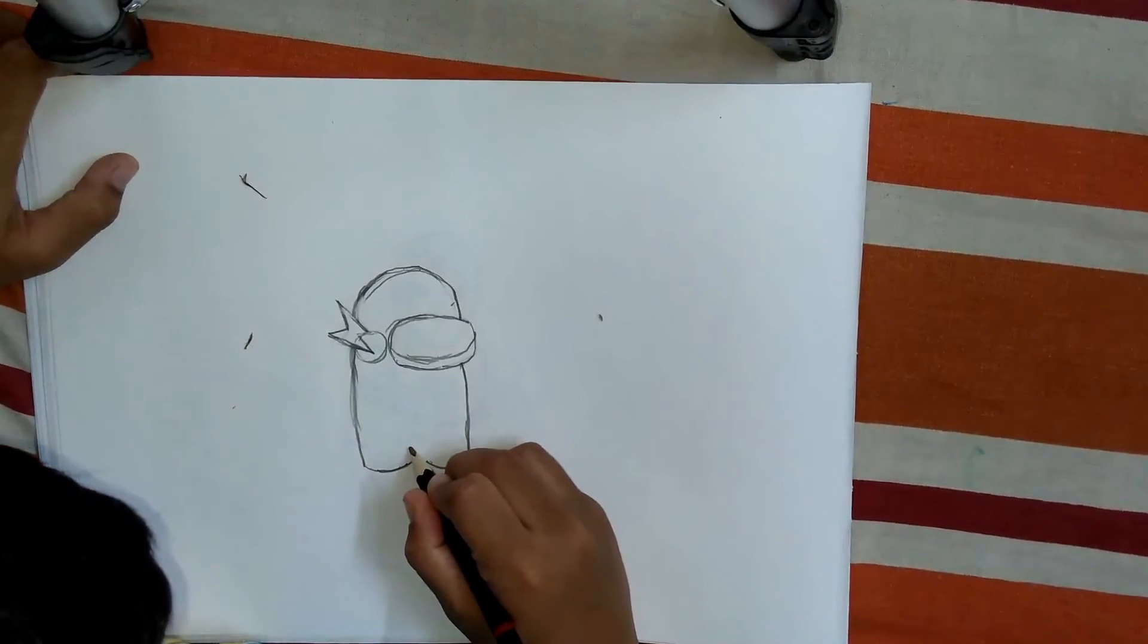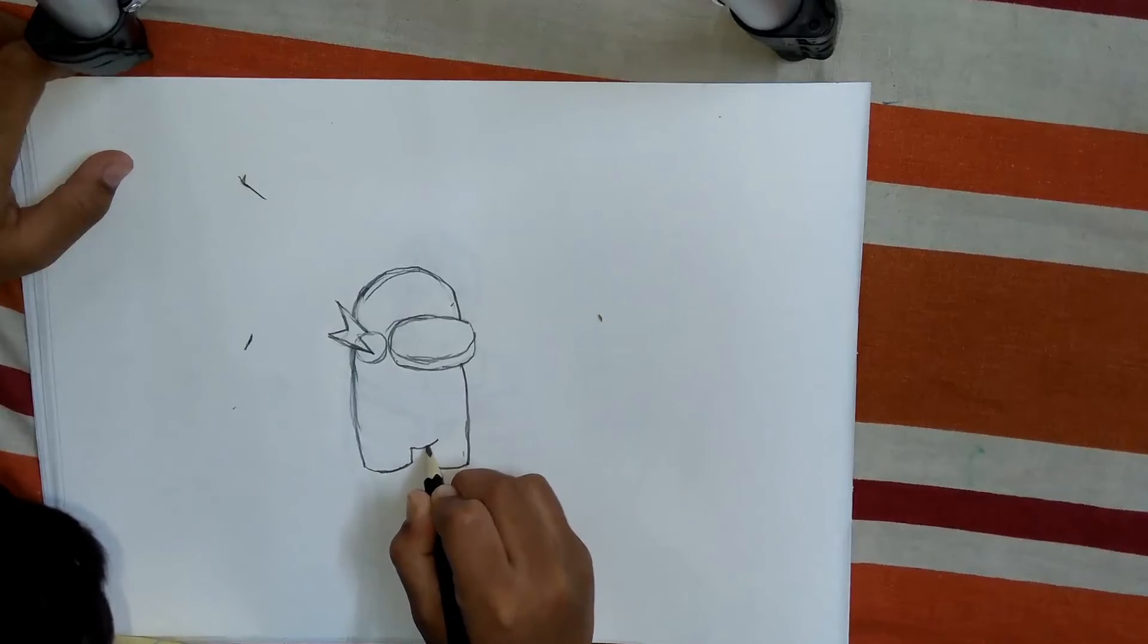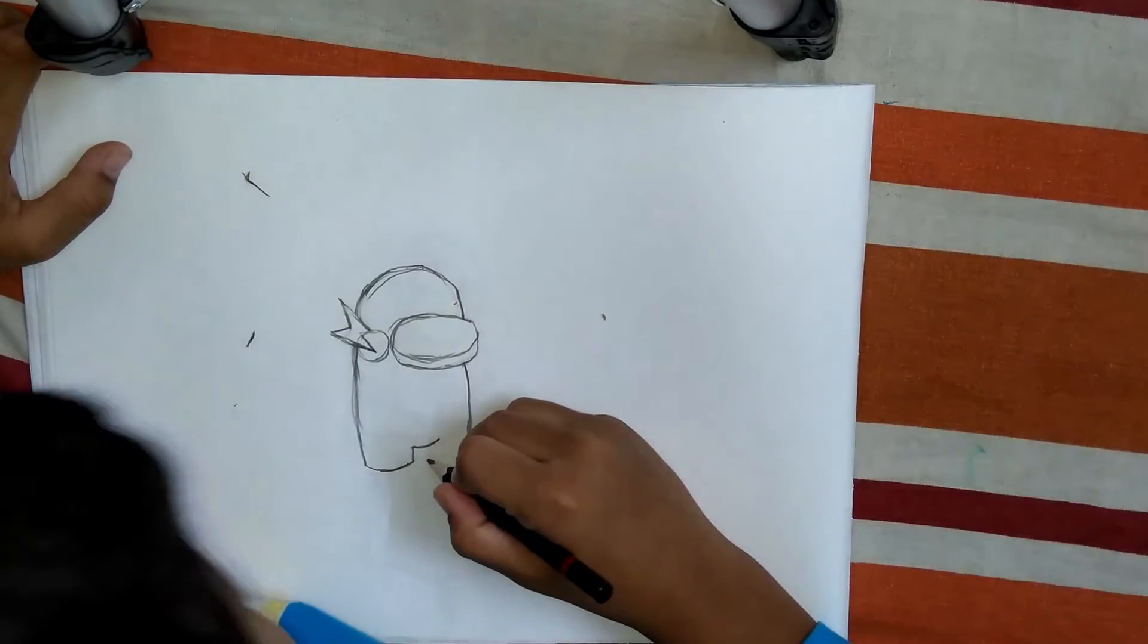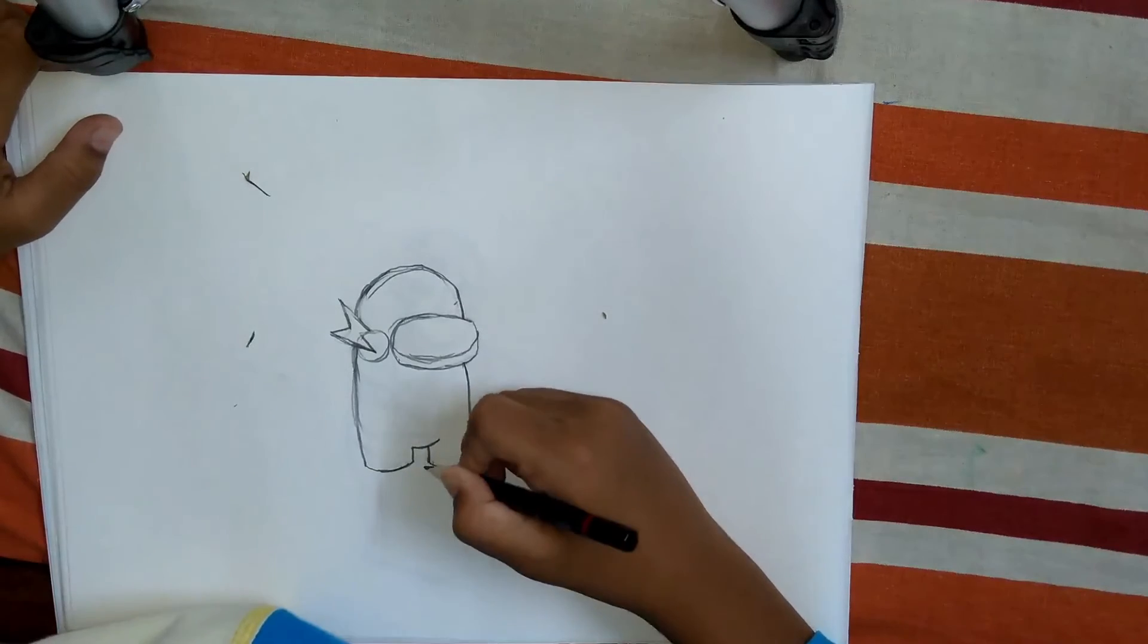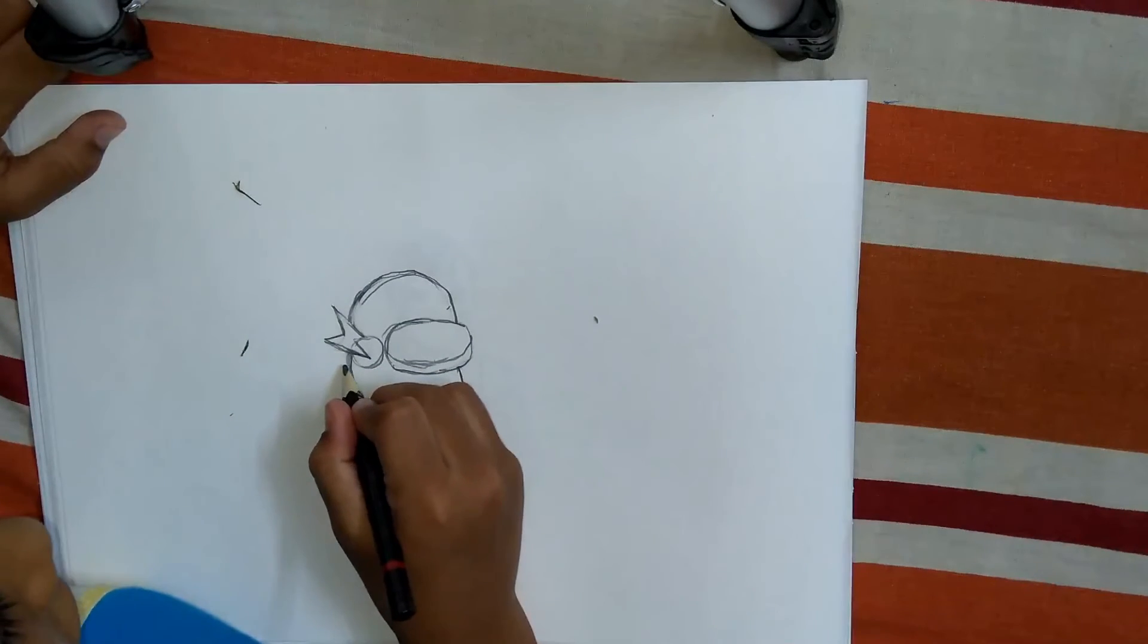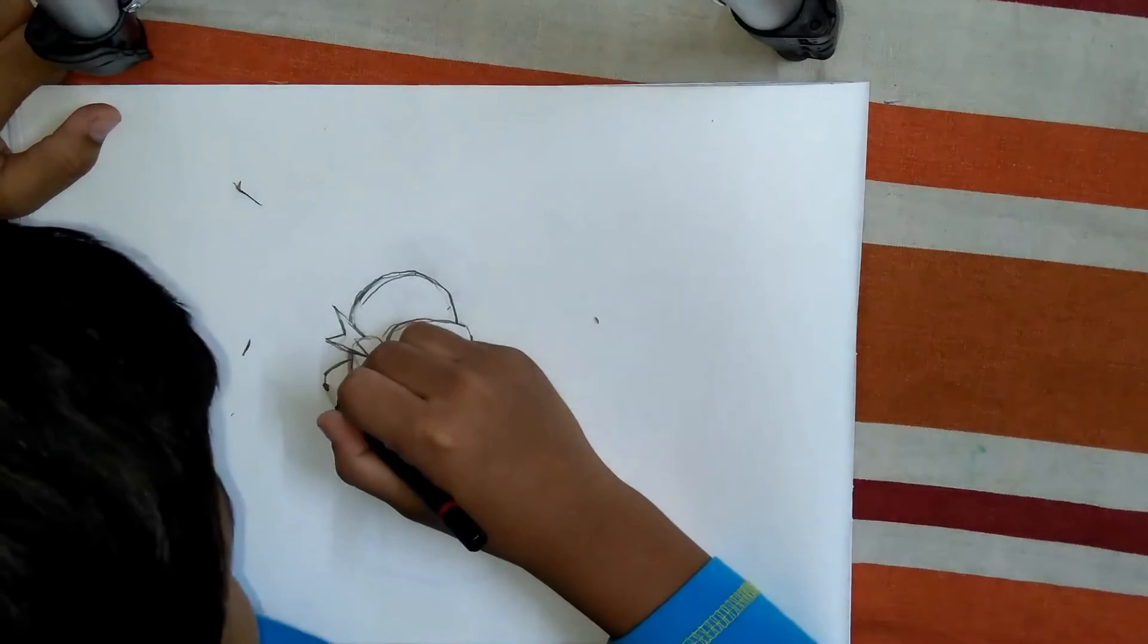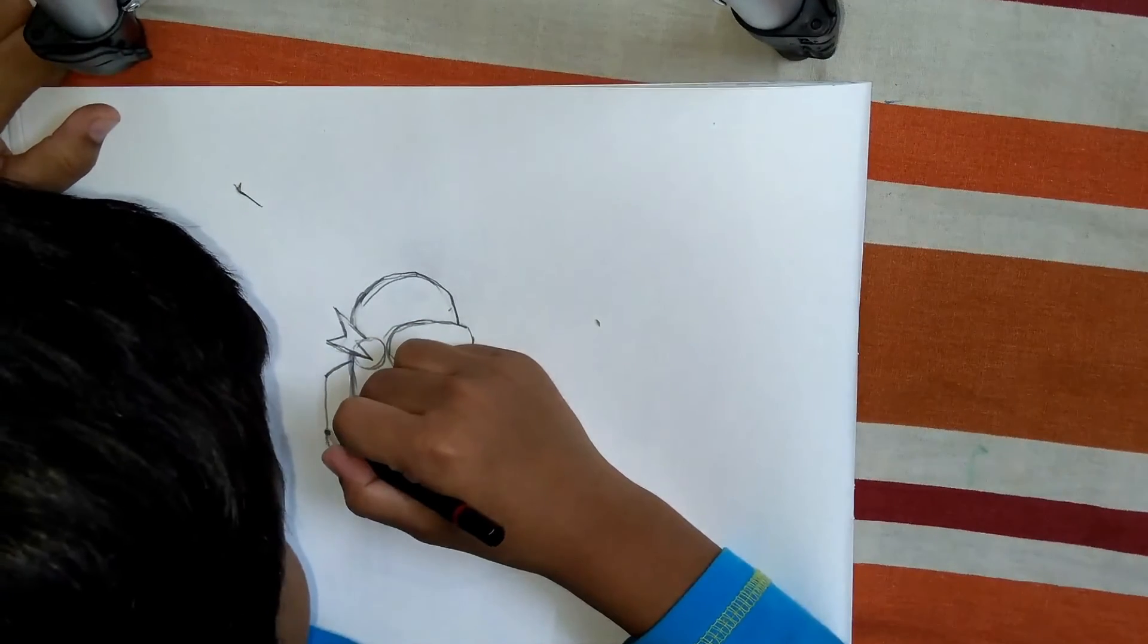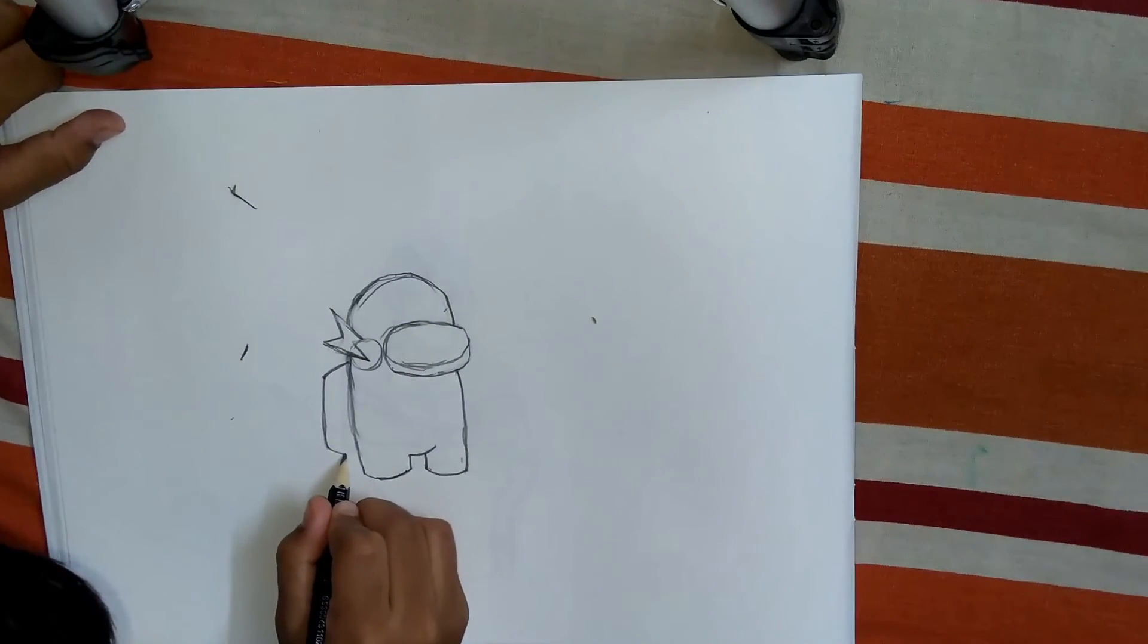Next, draw a straight line going up, a curved line, and a straight line. Now we are going to draw the hand like this, then a curved straight line, and then like this.